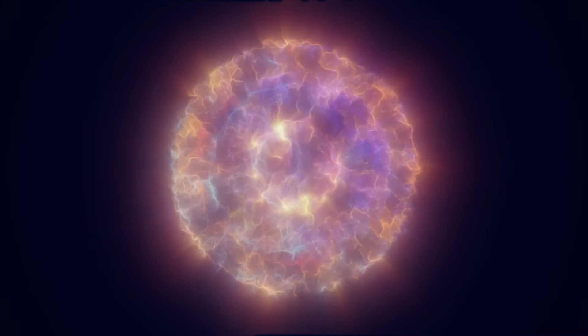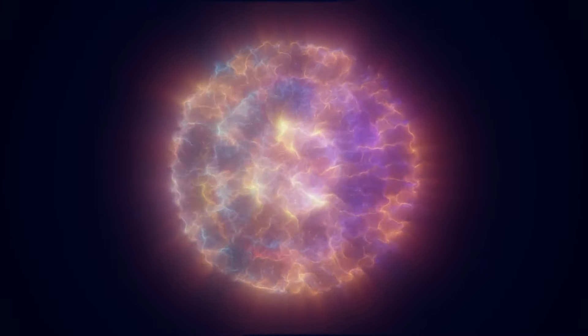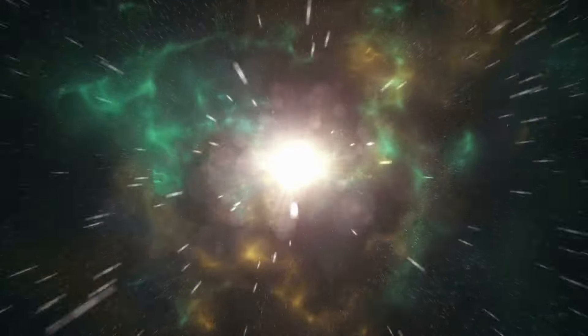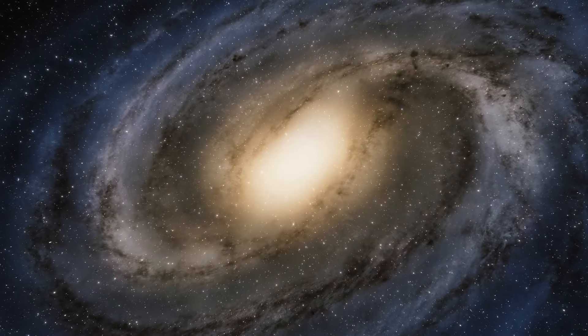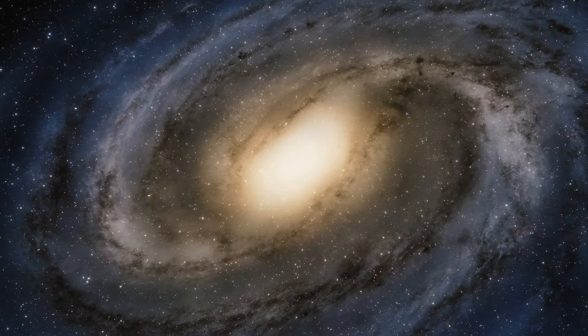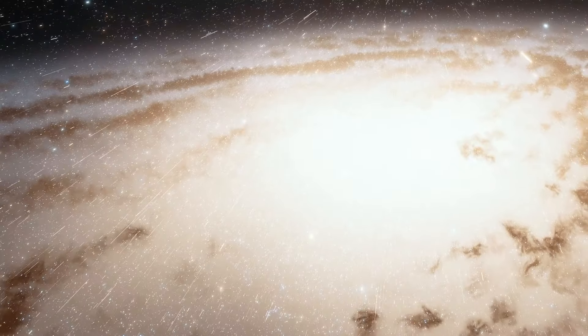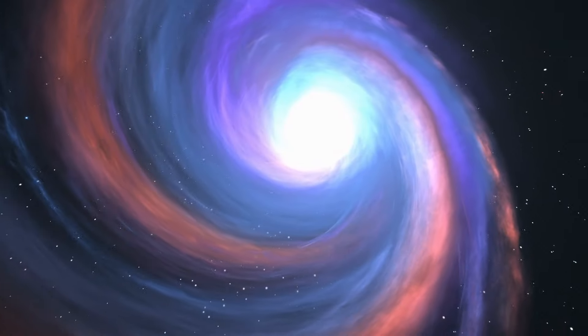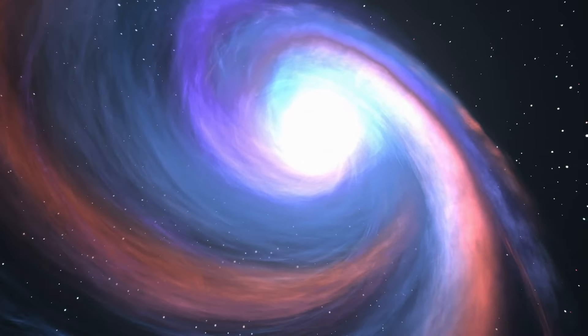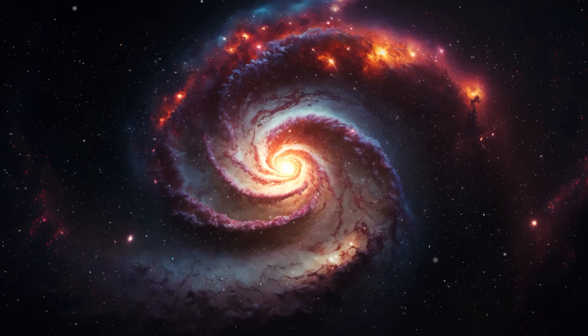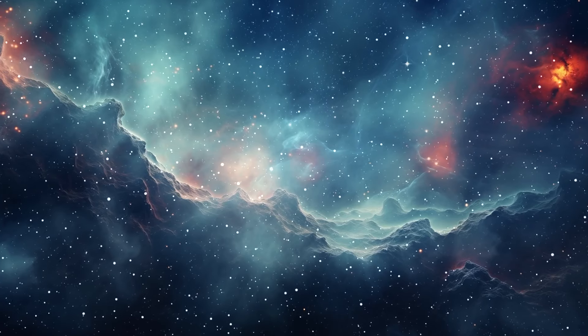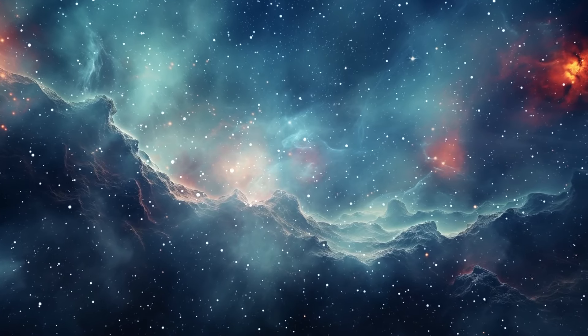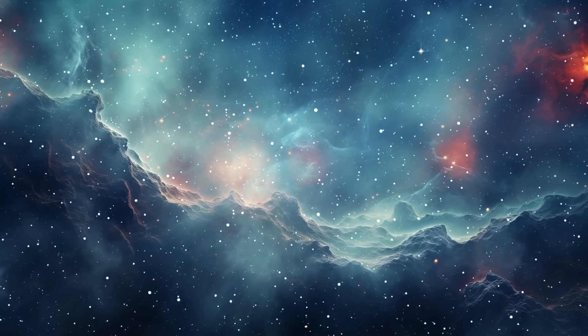Stars are primarily composed of hydrogen and helium, the two lightest elements, which were formed during the early stages of the universe in processes such as Big Bang Nucleosynthesis. The chemical composition of galaxies, including the Andromeda Galaxy, reflects the cumulative contributions of many generations of stars over cosmic time. Spiral galaxies like Andromeda typically have higher abundances of heavy elements compared to elliptical galaxies, indicating more extensive star formation and enrichment of interstellar gas with heavier elements.